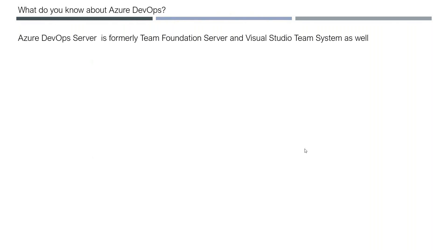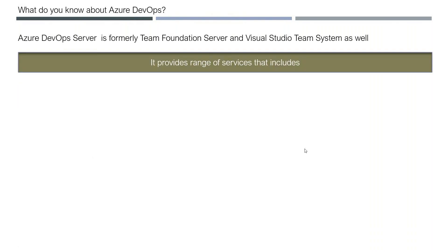Up until Azure DevOps, Microsoft was supporting only .NET-related technologies. From Azure DevOps onwards, they started supporting all other technologies like Java, Python, and others for doing CI/CD. That is the reason it became very popular.